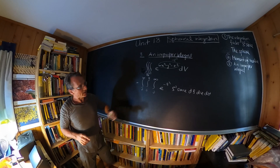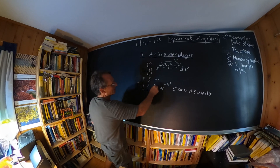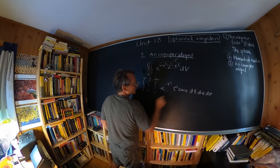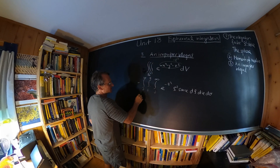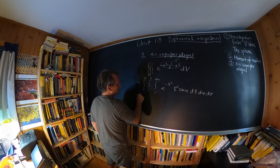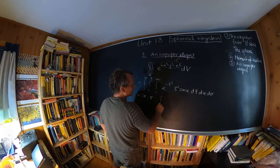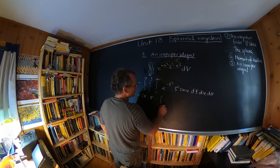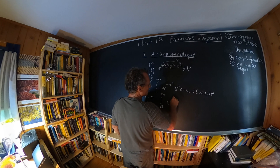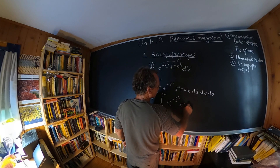We can do the angle integration quickly. The integral of sinφ from 0 to π gives 2, and the θ integral gives 2π, so together that's 4π. Then we're left with the challenging integral ∫₀^∞ e^(−ρ²) ρ² dρ.